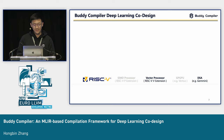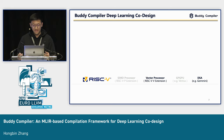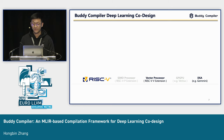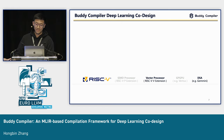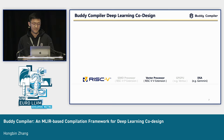In our compiler framework, we focus on high-performance hardware like SIMD processors, vector processors, GPGPU, and DSA. Currently, we have implemented support for vector processors targeting RISC-V vector extensions. We are also trying to support the DSA — specifically the Gemini accelerator from the RISC-V ecosystem. That covers the hardware side.